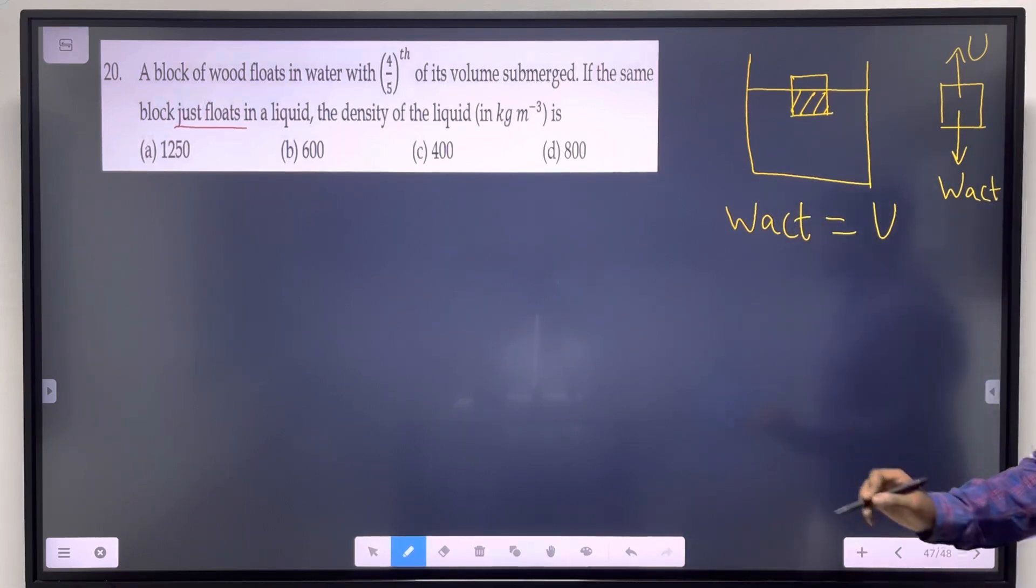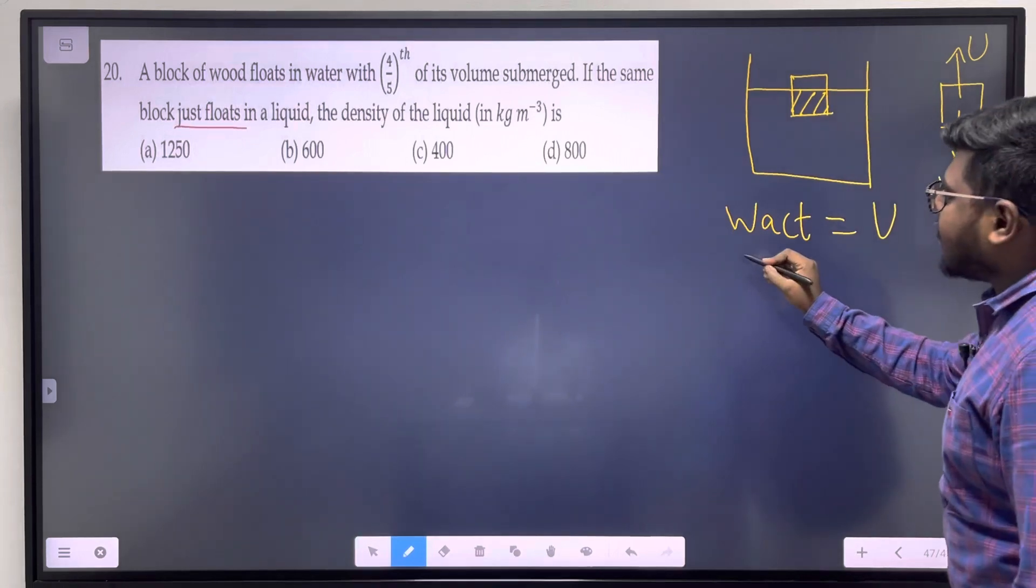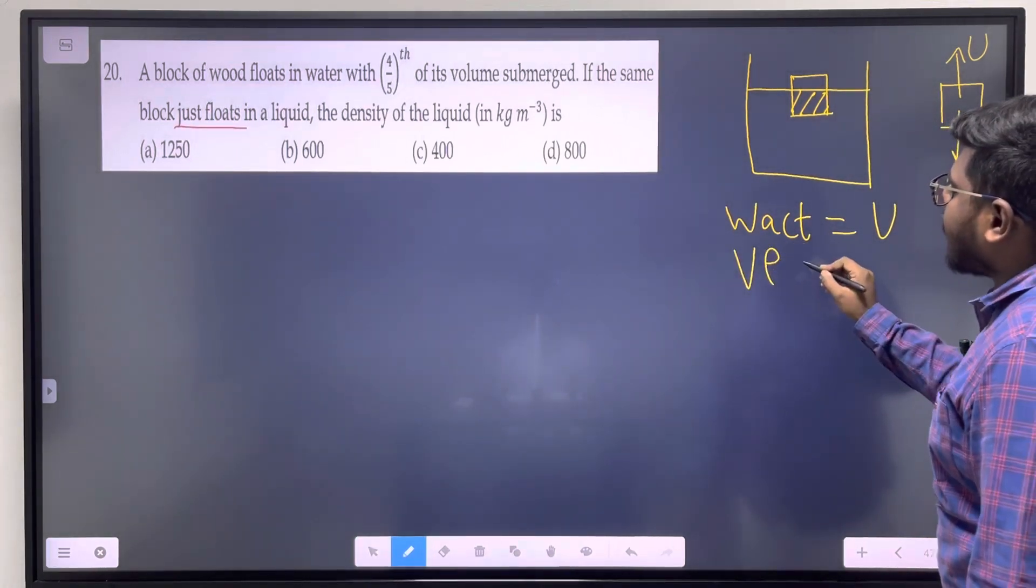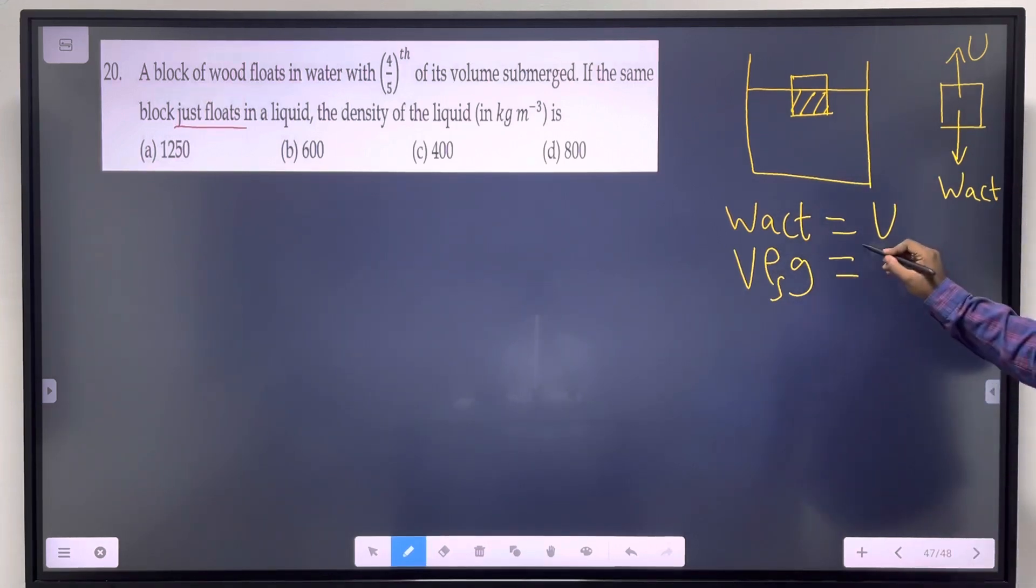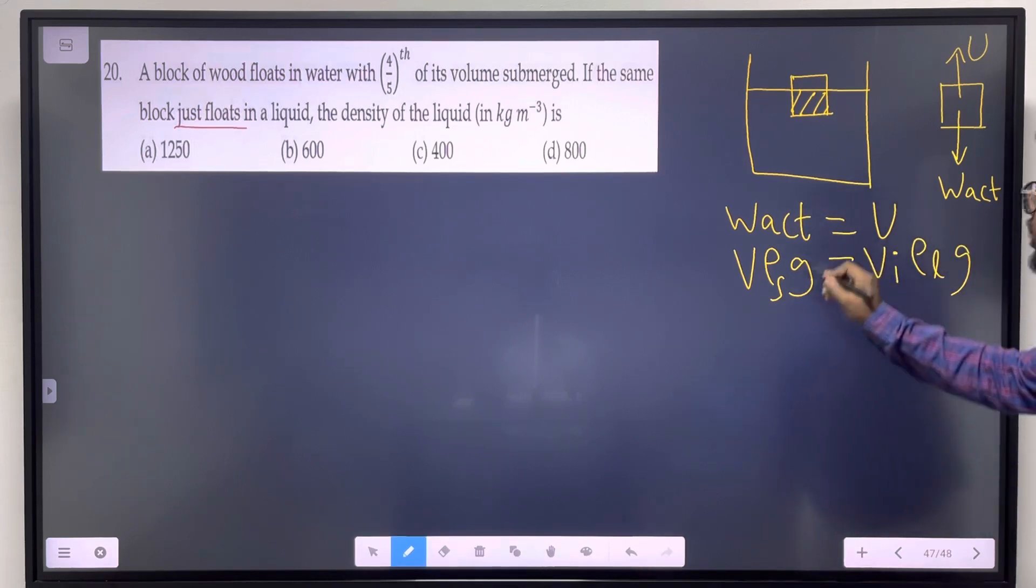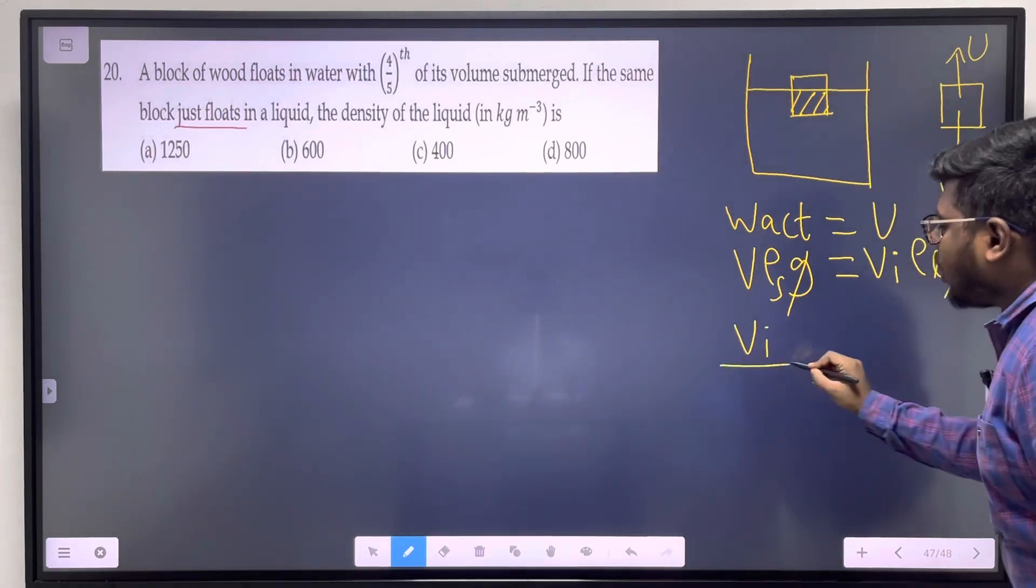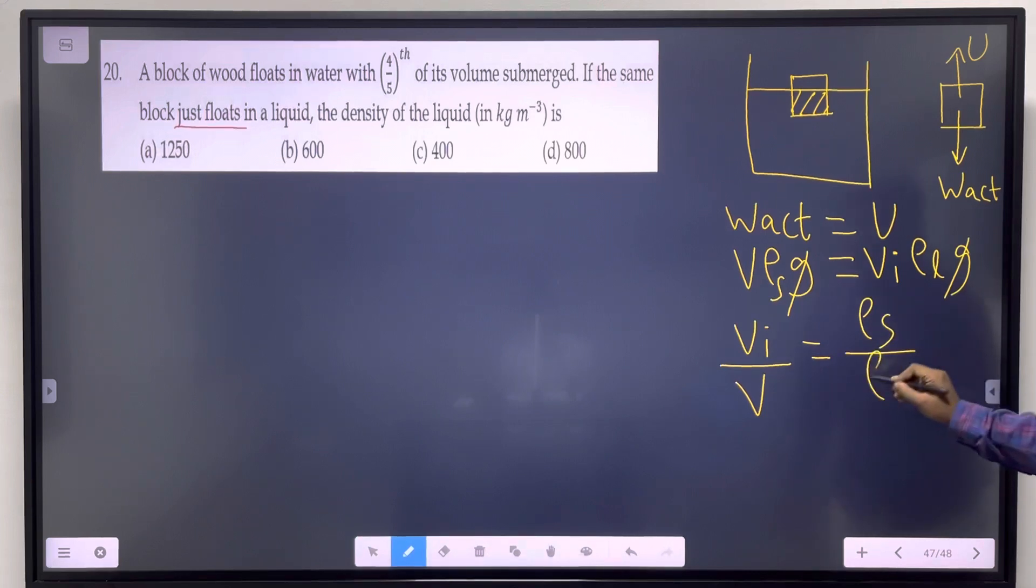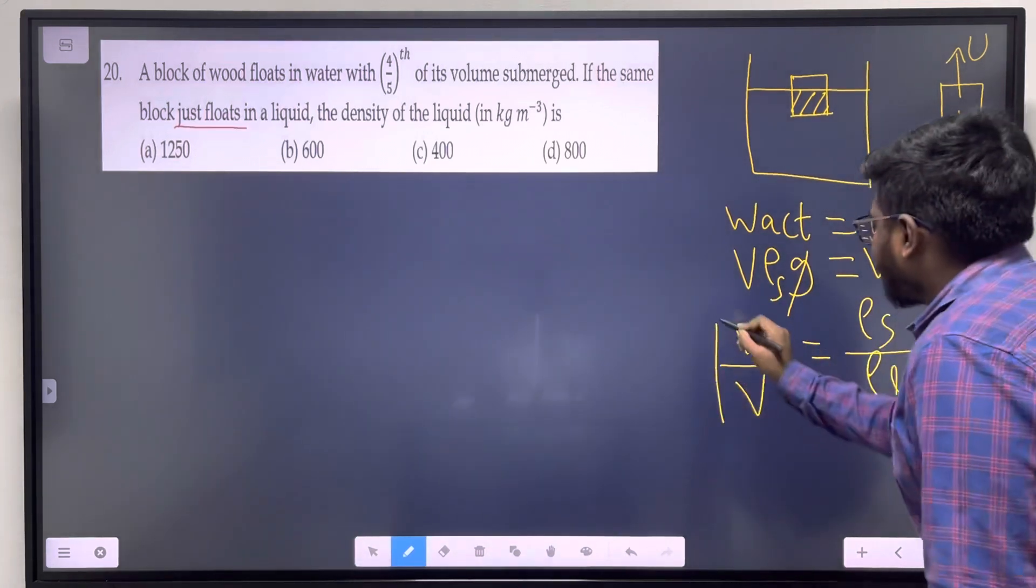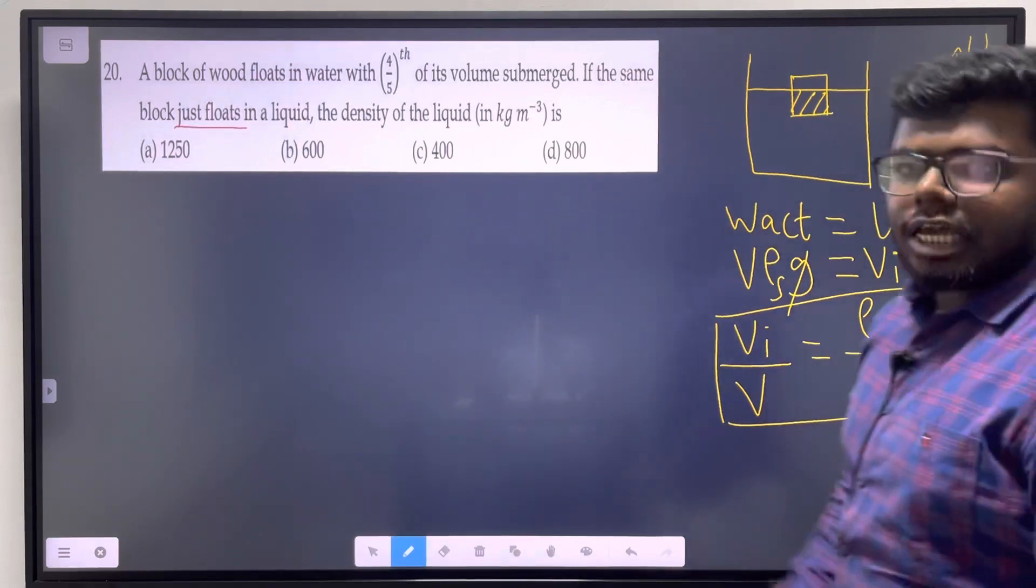The actual weight of the solid is mg = V ρ_s g, where V is volume and ρ_s is density of the solid. This equals the upthrust: V_i ρ_l g, where V_i is immersed volume and ρ_l is density of liquid. Canceling g, we get the formula: V_i/V = ρ_s/ρ_l.